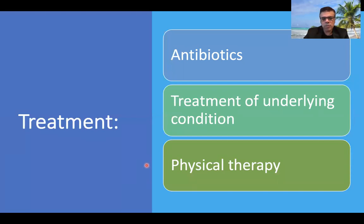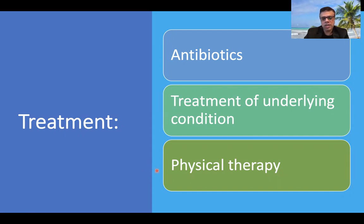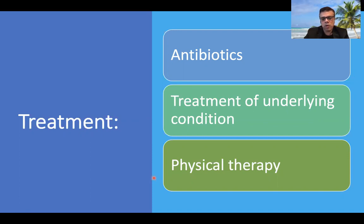To recap: bronchiectasis commonly results from superimposed infections emanating from underlying conditions like cystic fibrosis, tuberculosis, or aspergillosis, which predispose to obstruction and inflammation. This causes destruction of the underlying airways and connective tissue, leading to permanent dilatation of airways — bronchiectasis. Bronchiectasis is commonly treated with antibiotics, physical therapy, and treatment of the underlying condition, which is generally supportive.